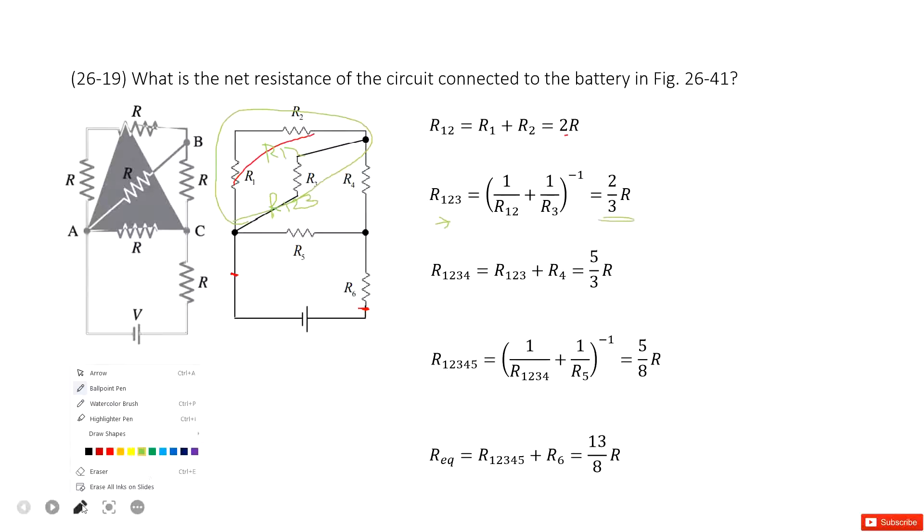Now next one you can see R123. We have the R123 connected in series with R4. Do you agree? R123 connected with R4. So there we have the R1234 as the series connection. R123 plus R4, right?